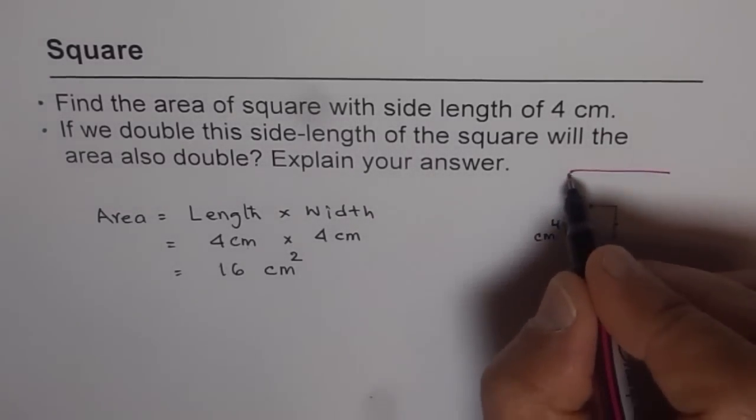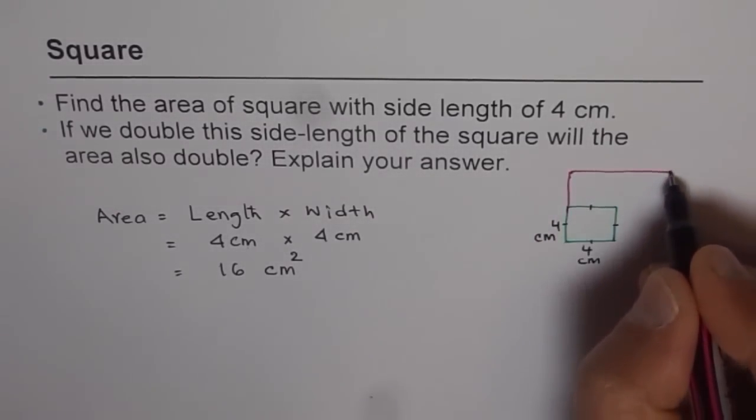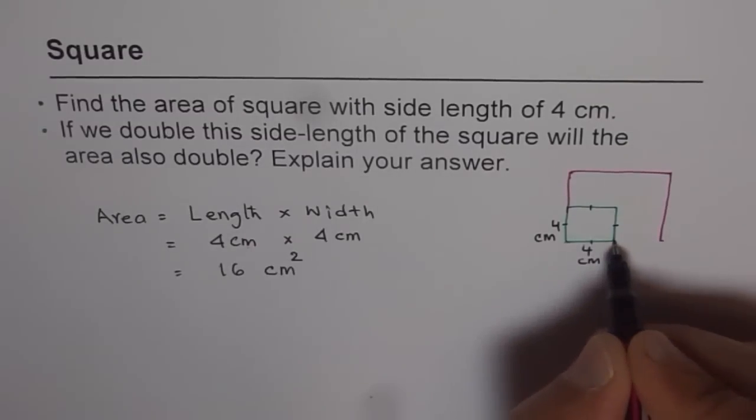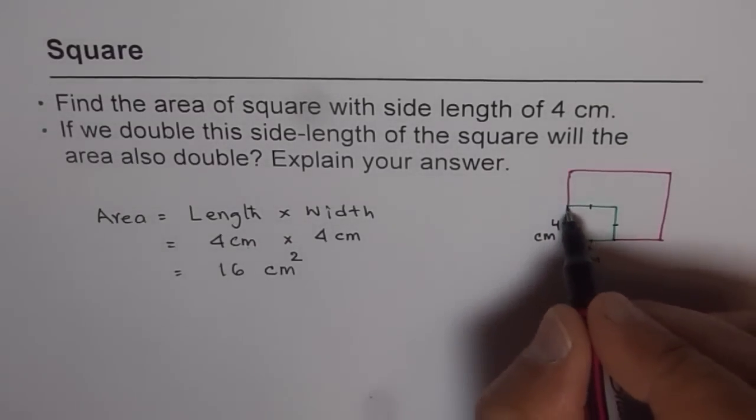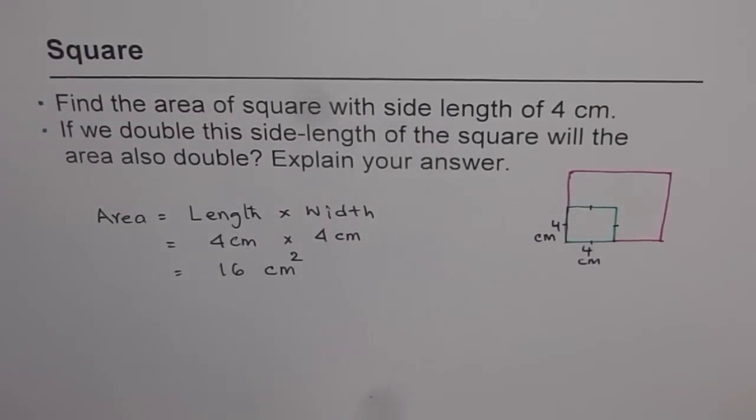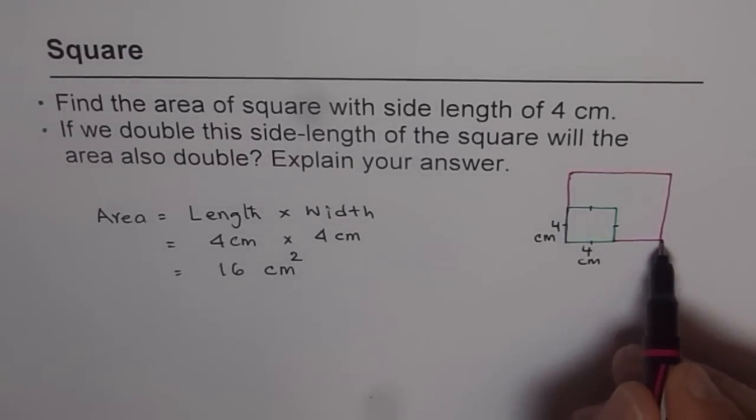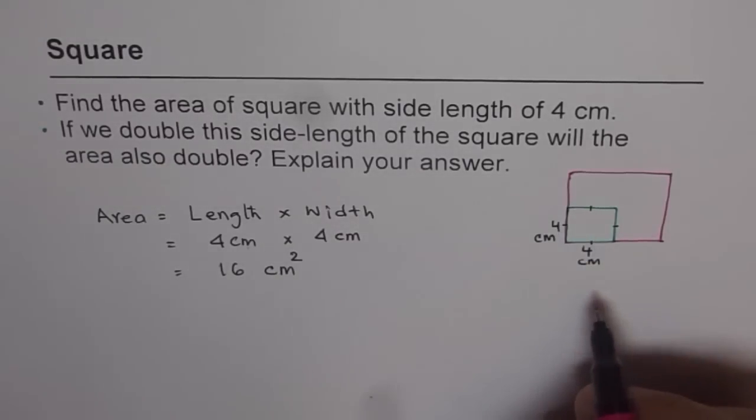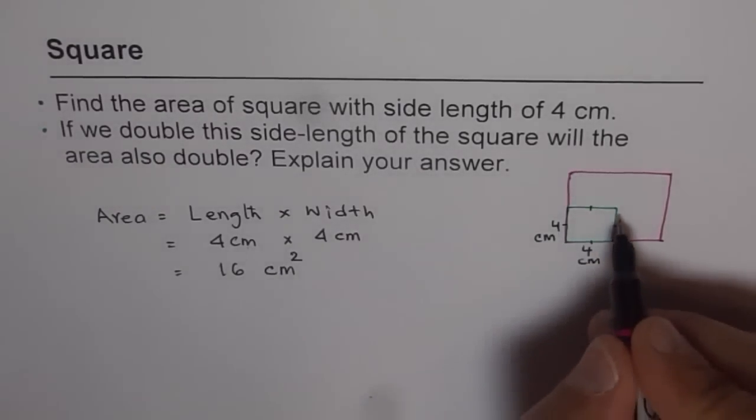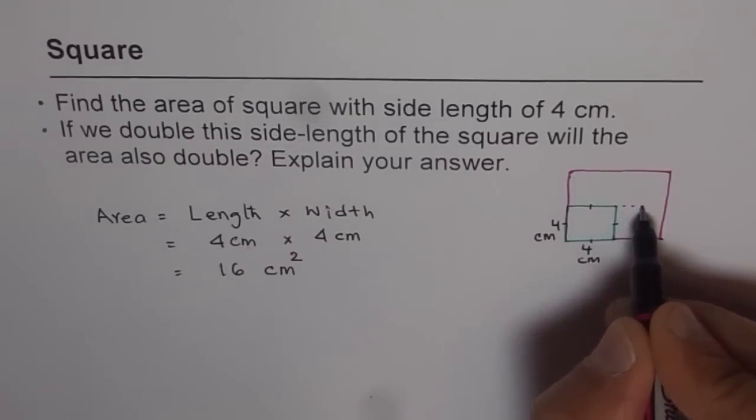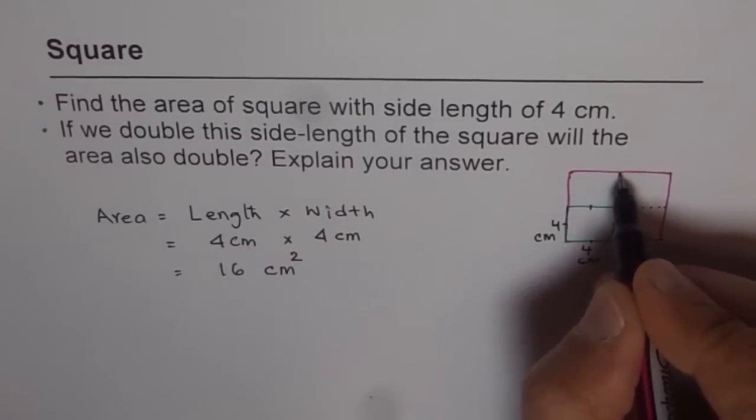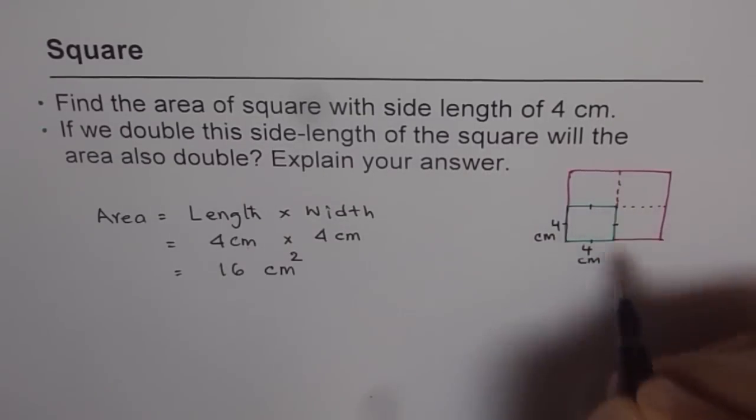I get a square which is like this. This is my new square, the big one, and the green one was my original. What do you think? If I double my length and my width, is the area doubled? What do you think? Let's look at once again. Let me draw these dotted lines. Does it give you a clue?